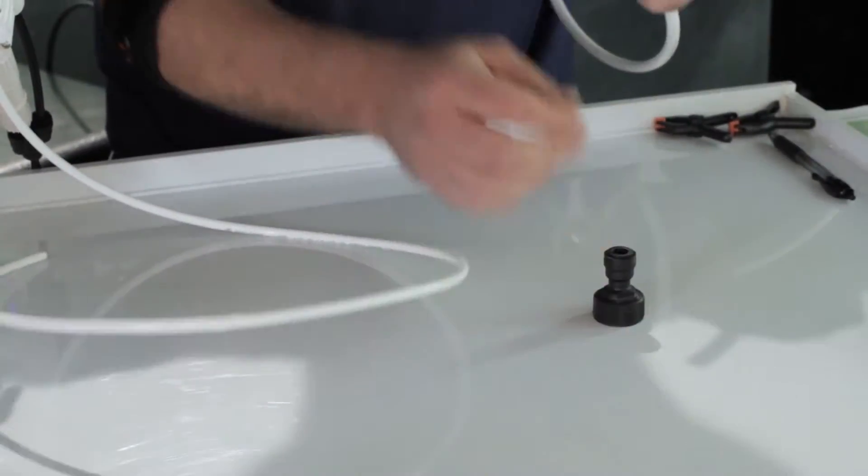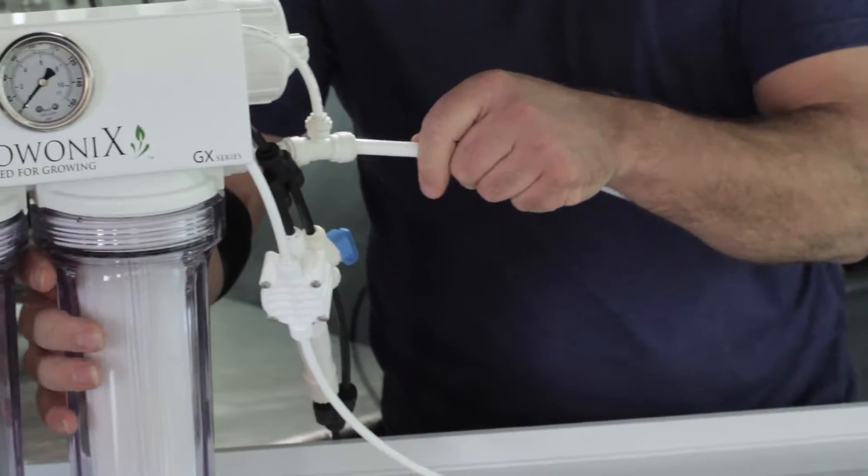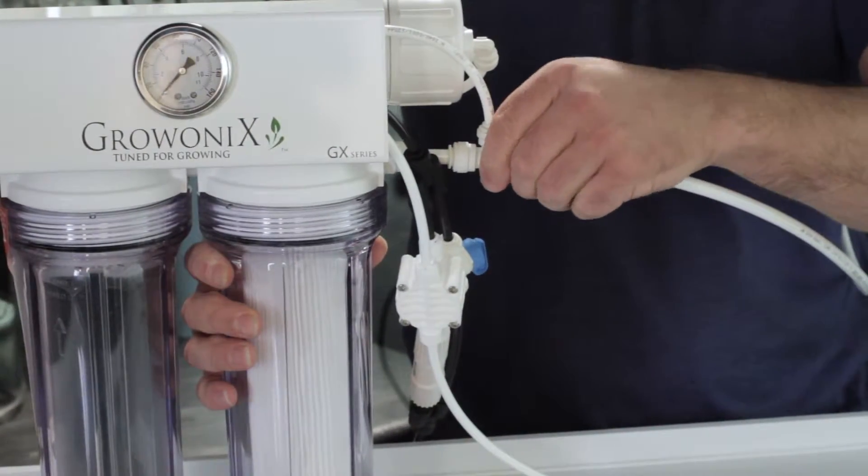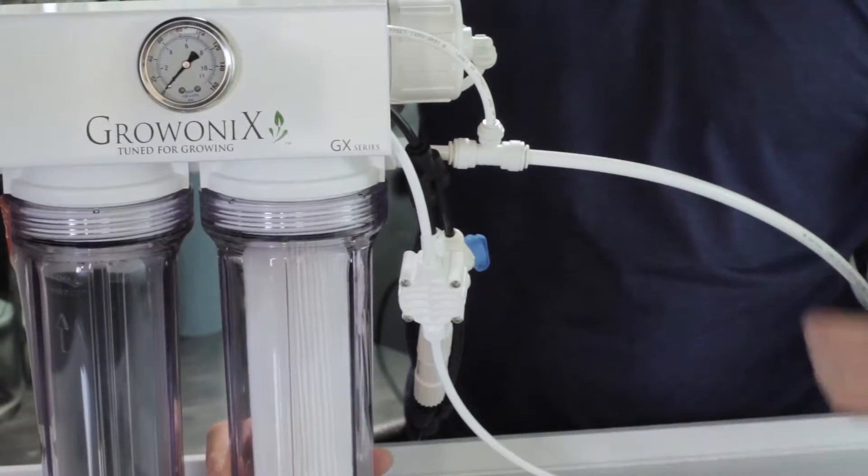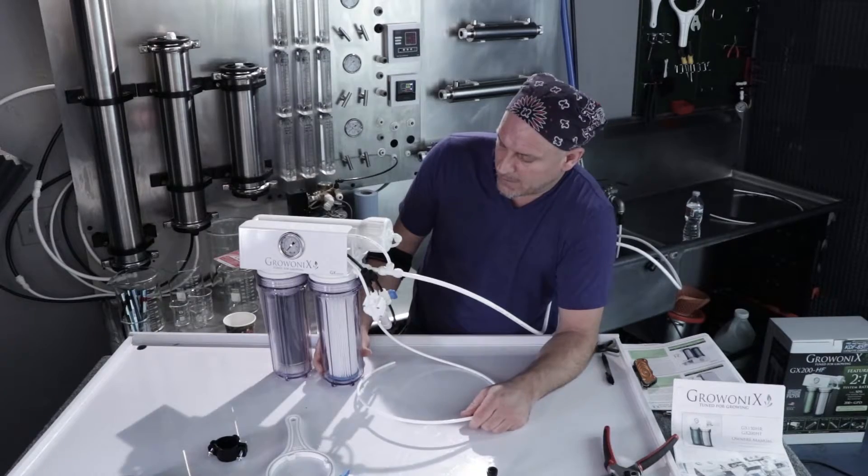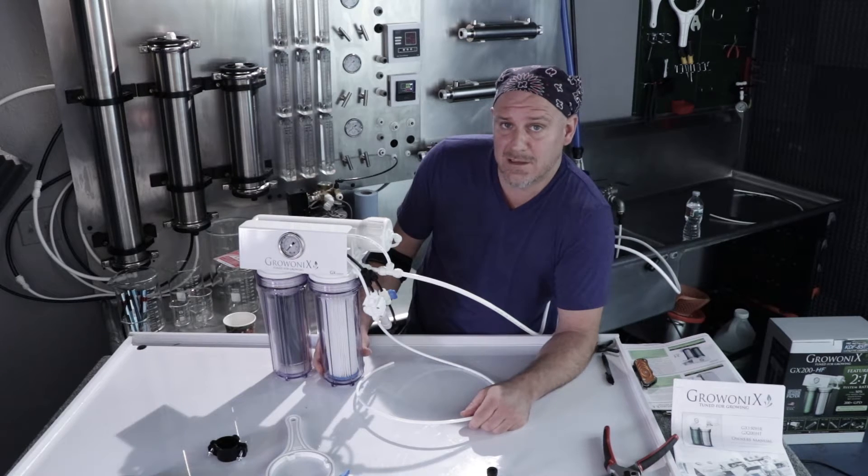So we're going to hook it up to a stainless ball valve and simply take the other end of the feed line and push it into this reducing T on the input right here. Make sure it's seated past the O-rings into its proper seat. And that's it. The RO is connected. It's that simple.